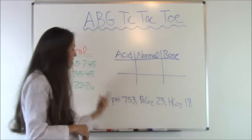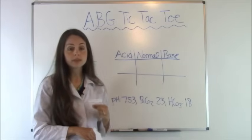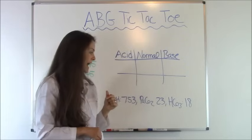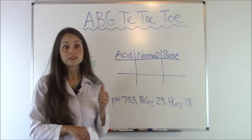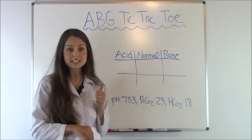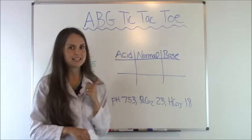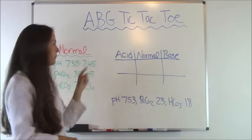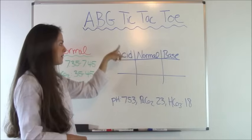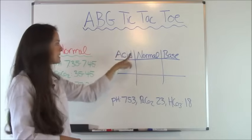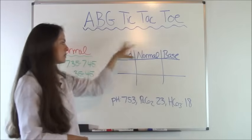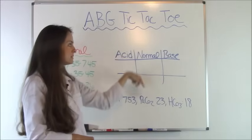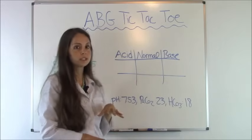For our first problem, we have a pH of 7.53, a PaCO2 of 23, and an HCO3 of 18. We set up our tic-tac-toe grid with acid, normal, and base as our baseline. Anytime we get a straight line of three up and down, we know we're done.